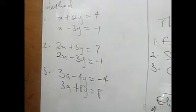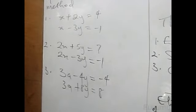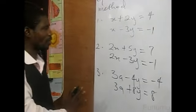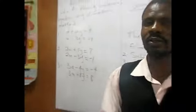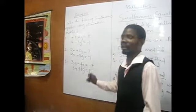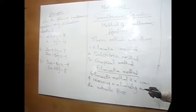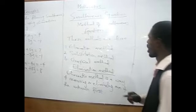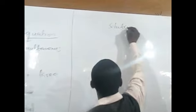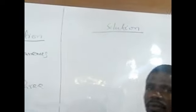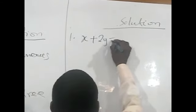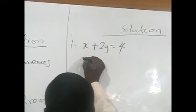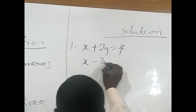Let me explain the first example. What you need to do is to understand the principles of the elimination method. The first question is: x plus 2y equals 4, and the second one is x minus 3y equals 4.